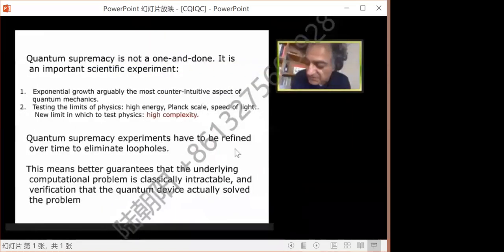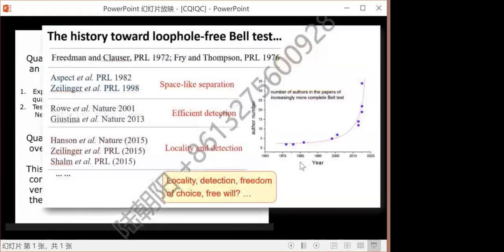As pointed out by many people, quantum supremacy is not a single shot achievement, but have to be defined over time to eliminate loopholes, because smart people will come up with better and better classical algorithms. This is in spirit, very similar to the Bell test history, which lasted for 40 years. There's still ongoing efforts, for example, to eliminate the freedom of choice loophole, maybe people think sounds paranoid.